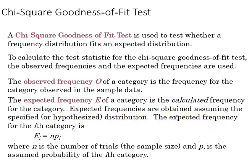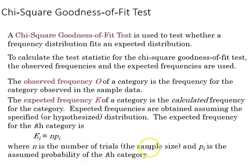The expected frequency for the ith category is E sub i equals NP sub i, where n is the number of trials, which is our sample size, and P sub i is the assumed probability of the ith category.